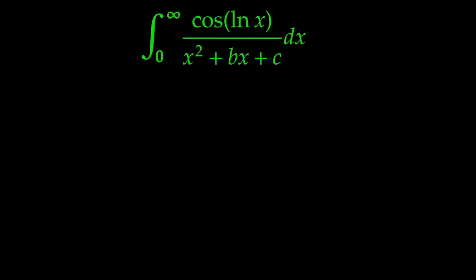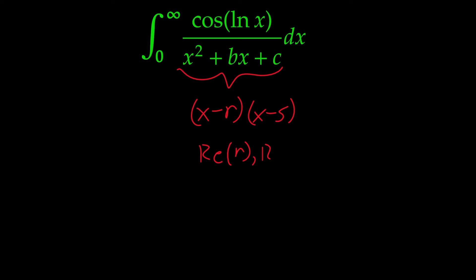Hello everyone and welcome back to another video where we are going to be complex-analysing this tricky integral. I say tricky because depending on what assumptions you make about b and c — the imaginary and real parts of the solutions — you get very different results. We can factor the denominator as (x - r)(x - s), with the restriction that the real part of r and the real part of s are both less than zero, which simplifies things quite a bit.